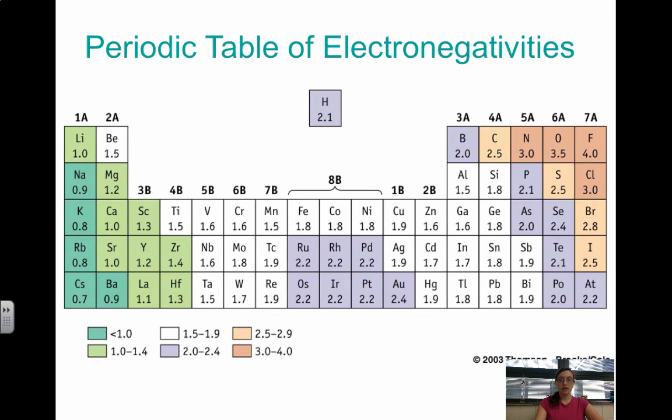So here is the periodic table of electronegativities. Notice fluorine, most electronegative at 4.0. Cesium down here, 0.7. So this will actually be very helpful as you're going through calculating electronegativity differences.